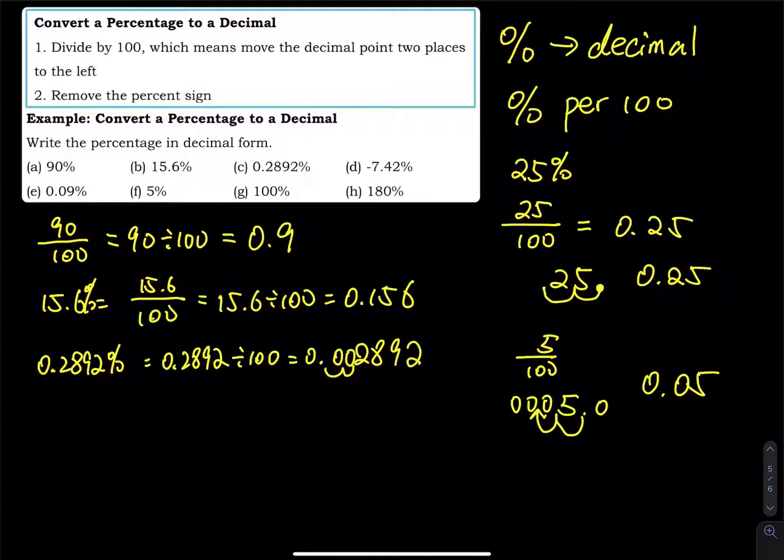And then the next one is negative 7.42%. Negative 7.42%. So that is negative 7.42 divided by 100. So that equals negative 0.0742.